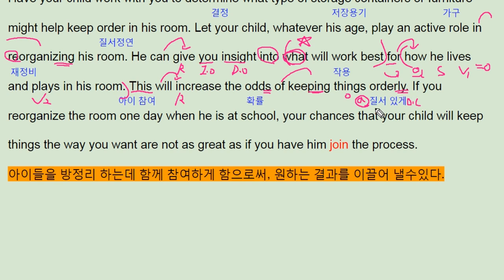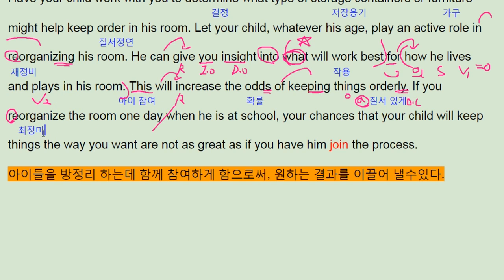상태동사 목적어 목적보어를 썼는데, ly 들어가서 좀 이상해 보이지만 사실상 orderly는 형용사에요. 질서 있게 라고 쓰이는 ly로 되어진 형용사로 봐주셔야 됩니다. 그래서 5형식 구조. 그래서 만약에 네가 인정한다면, 인지한다면 — re-organize, 다시 정리, 재정리한다면.